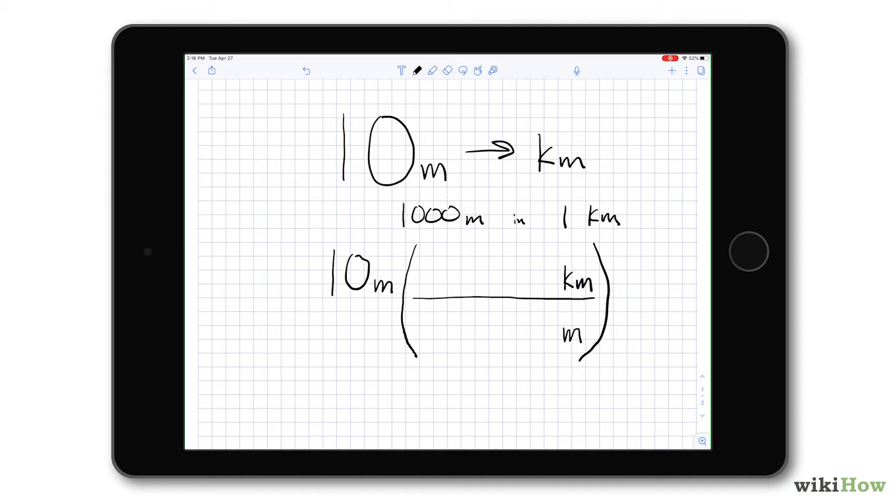So the ticket is to put the units in first because they tell you where to stick the numbers. See how the meters cancel? That's what you want. Now the units tell you where to put the numbers. There are 1,000 meters in one kilometer. So this is the key step. The units tell you where to put the numbers.